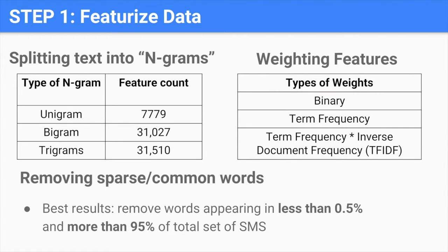We continued to featurize the data based on the type of n-gram. We split each SMS into individual words or sets of words, each being a separate attribute. There are three types of weights for each word term: binary, which is whether a word appears or not; term frequency, which emphasizes how many times a word appears in an SMS; and term frequency times inverse document frequency, or TF-IDF, emphasizing rare words that don't appear frequently in the whole set of SMS.